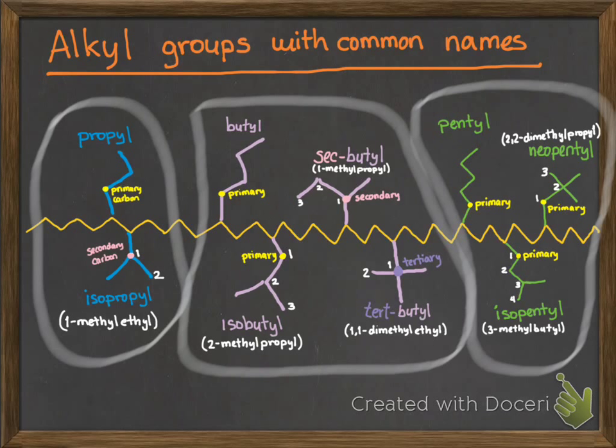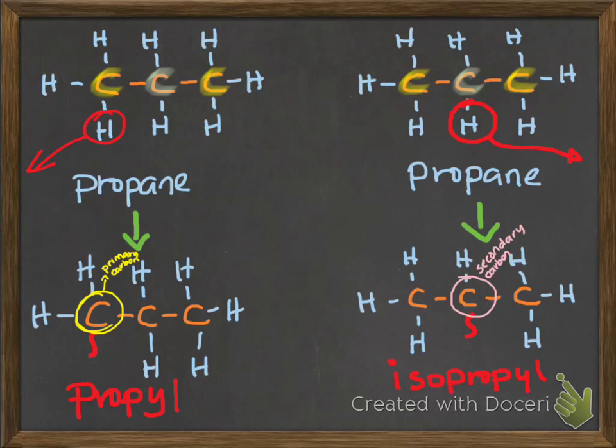How are these alkyl groups formed? This is from propane. Propane can lose a hydrogen from a primary carbon to become propyl, or from the carbon in the middle to be named isopropyl. This is an isomer of propyl.